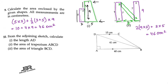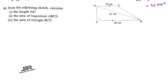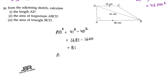Now sum number 10. From the adjoining sketch, calculate the length of AD. The base equals 40 centimeters and the two lines are parallel. Since the angle is 90 degrees, ABD is a right angle triangle. So AD² = 41² − 40² = 1681 − 1600 = 81. Therefore AD = 9 centimeters. That's your first answer.